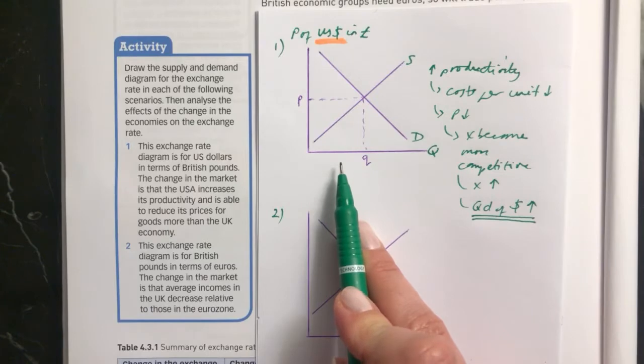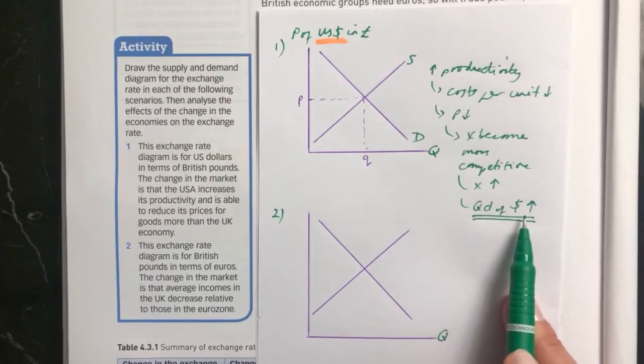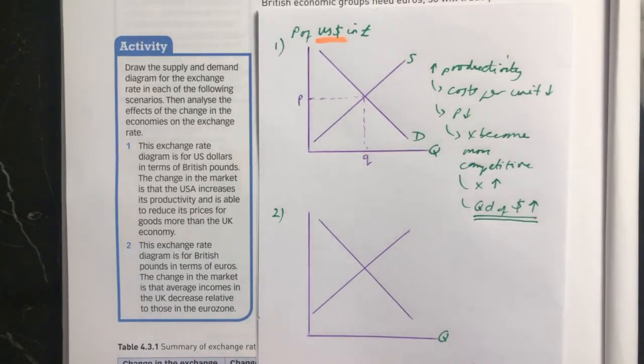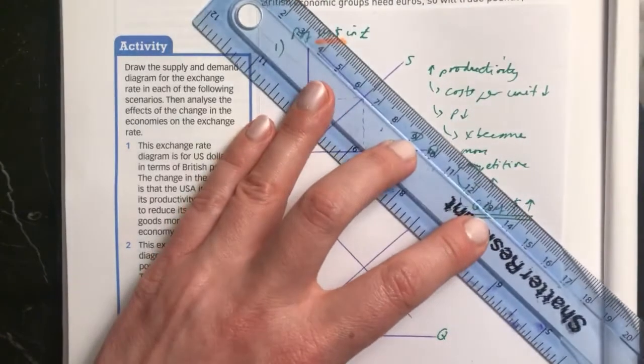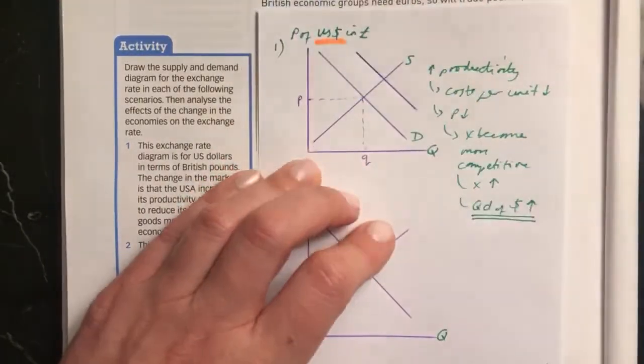And because the US goods are cheaper, they're more competitive, exports from the US go up. This means that the quantity demanded of dollars goes up. And you know that if you have an increase in the quantity demanded of dollars, you need to shift the demand curve to the right.